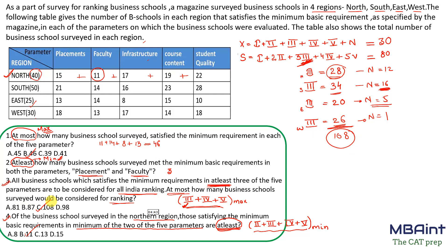To summarize why we maximized exactly3: to maximize the complete term (exactly3 + exactly4 + exactly5), we give maximum value to exactly3 because it has the lowest coefficient. Values assigned to exactly4 or exactly5 get multiplied by larger coefficients, consuming the equation faster. By maximizing exactly3, we maximize the total count, giving a final answer of 108.